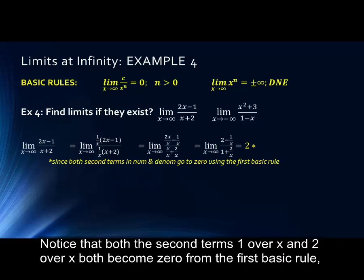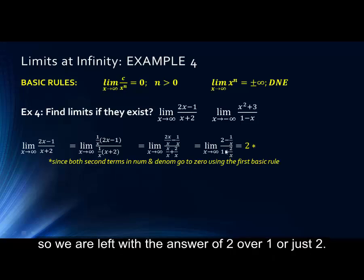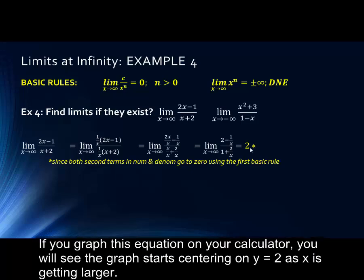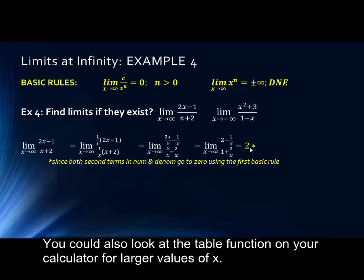Notice that both the second terms, 1 over x and 2 over x, become 0 from the first basic rule. So we are left with the answer of 2 over 1 or simply 2. This is the answer for this limit. If you graph this equation on your calculator, you will see the graph starts centering on y equals 2 as x gets larger. You could also look at the table function on your calculator for this function for larger values of x.